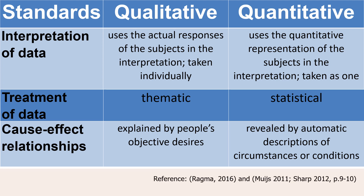For cause and effect relationships, under qualitative research, these are explained by people's subjective desires or the subject's perspective toward a phenomenon. Whereas under quantitative research, cause and effect relationships are revealed by automatic descriptions of circumstances or conditions. This has something to do with the variables that will be discussed in the next lessons.